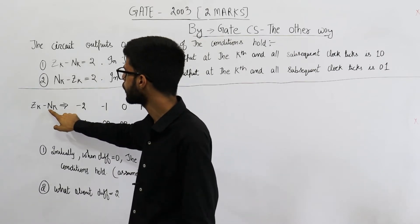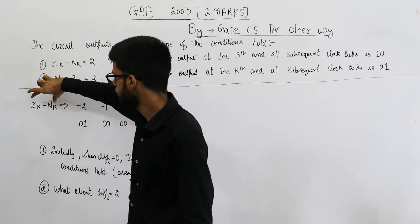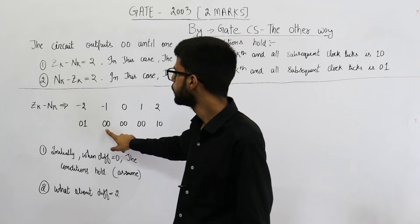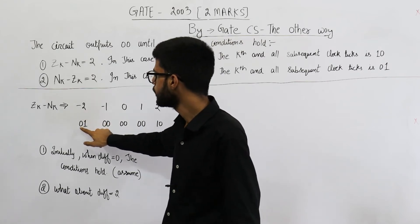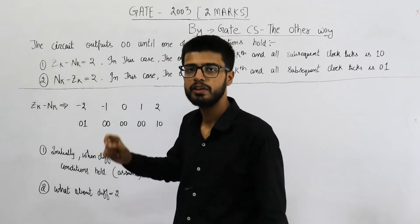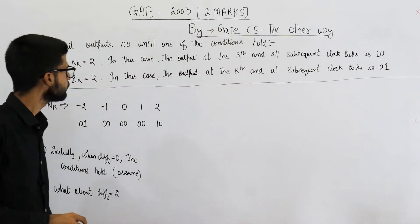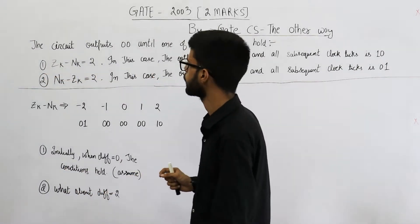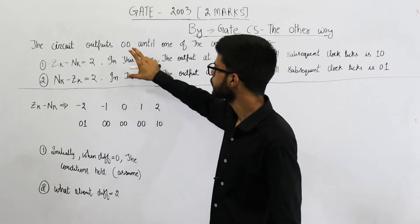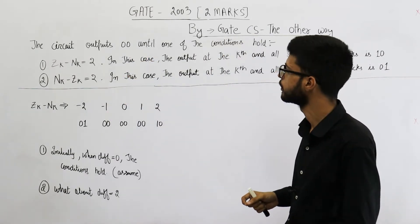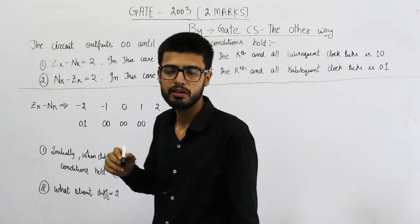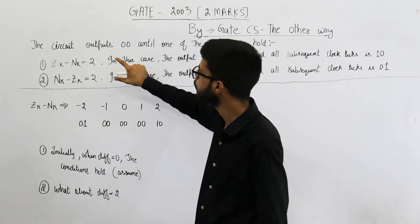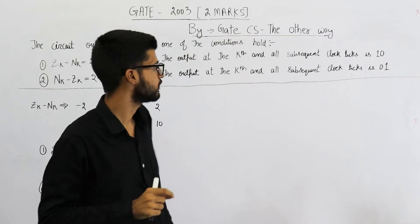Similarly, if this difference is negative — that is, number of ones increase — and this value becomes negative one, we want the output to be 00 only. But once this difference becomes minus two, we keep on printing 01 for each and every bit of the input. Now these conditions are a bit ambiguous; the question is not very well framed. To infer these points from these statements, you need to assume that initially when the difference is zero, both of these conditions are true.